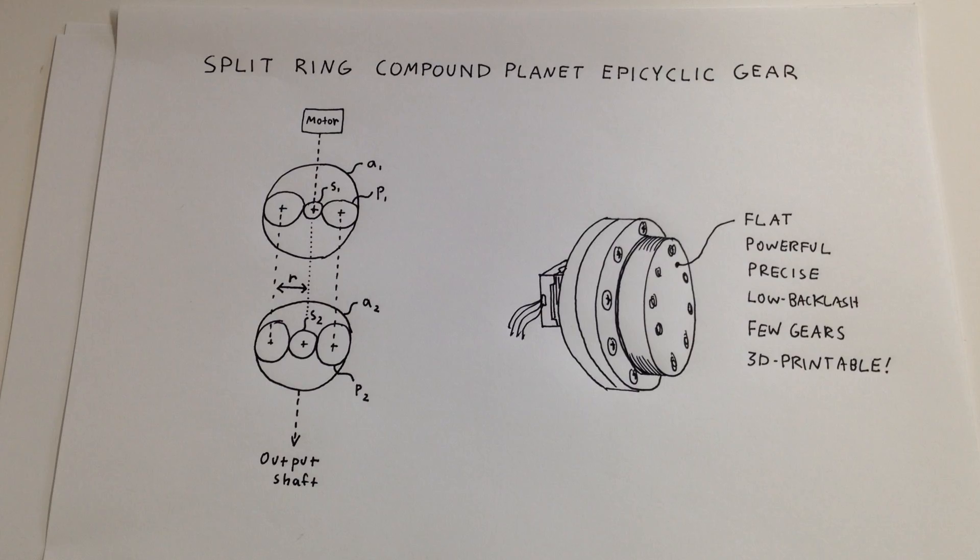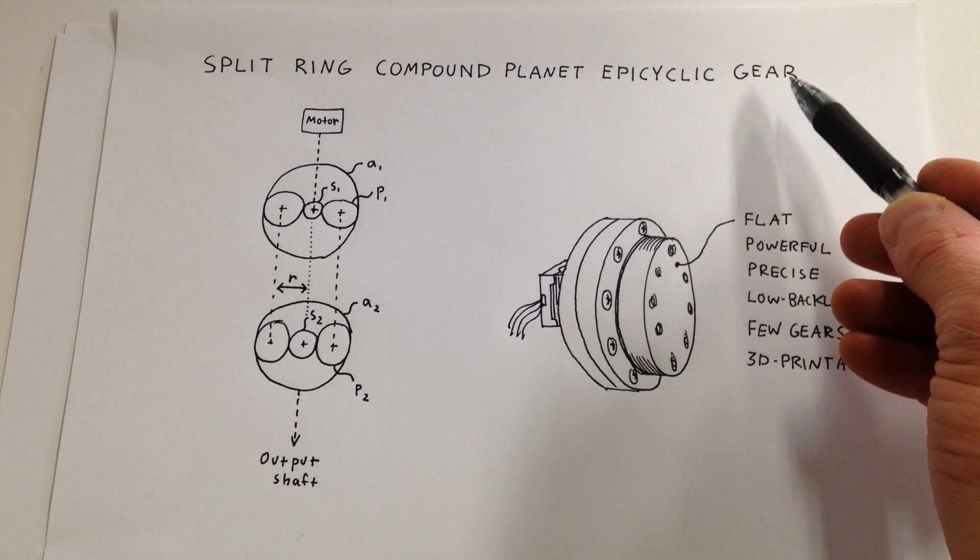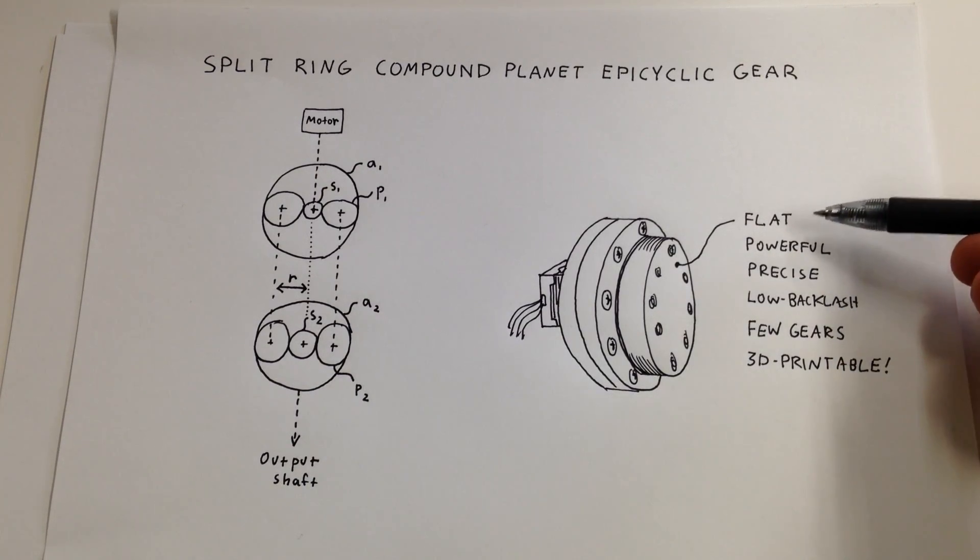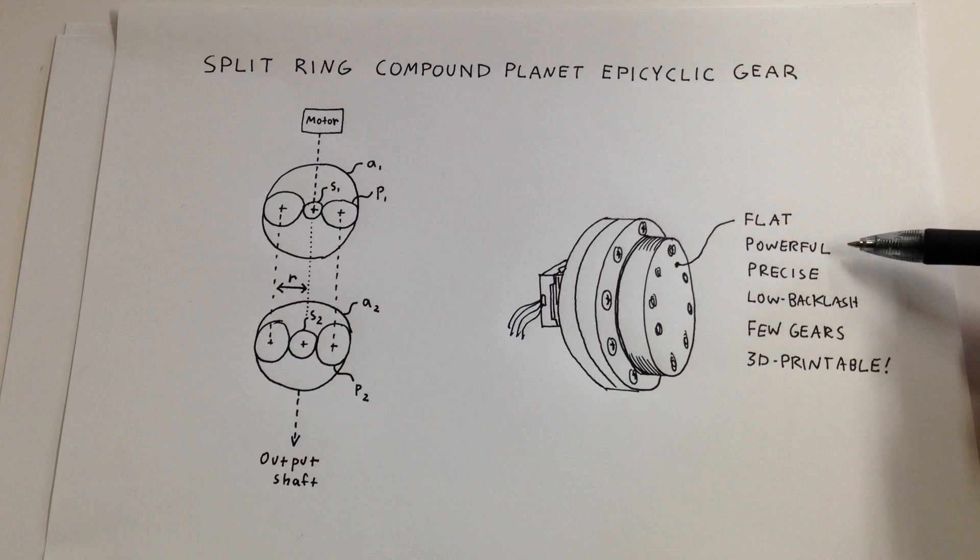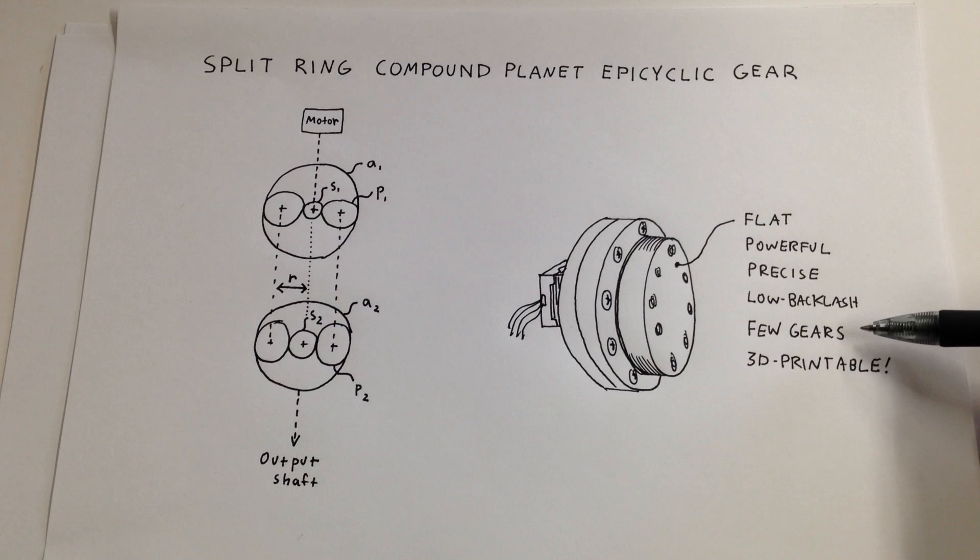So I wanted to talk with you today about something called the Split Ring Compound Planet Epicyclic Gear. Now it's a special arrangement of gears, and what makes it so special is that this type of gear arrangement can be very flat, can be powerful, it can be precise, it can have very low backlash, and it has relatively few gears for the kinds of ratios you can get - hundreds or thousands to one - and most importantly for my purposes, it's 3D printable.